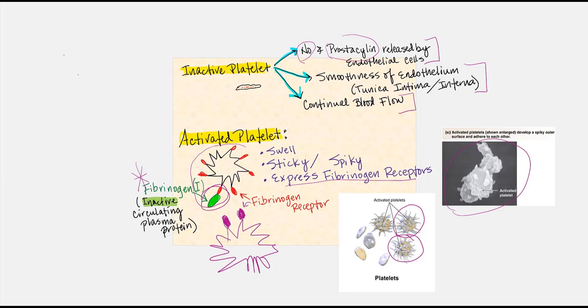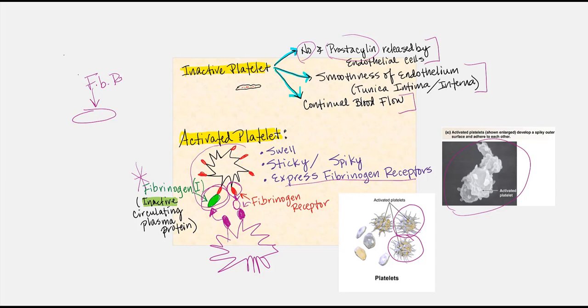So if we have another activated platelet — which swells, becomes spiky, and expresses fibrinogen receptors — and this fibrinogen receptor attaches to a fibrinogen, it's as if they've locked hands. If another circulating fibrinogen attaches to a receptor on the second platelet, these two platelets will stick together. In this way, fibrinogen in between the fibrinogen receptors of multiple activated platelets allows the platelets to aggregate, form a network, and eventually give us a platelet plug.